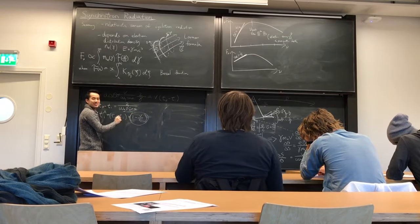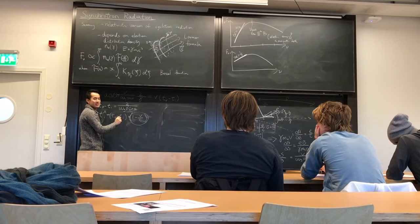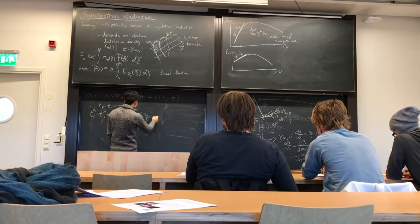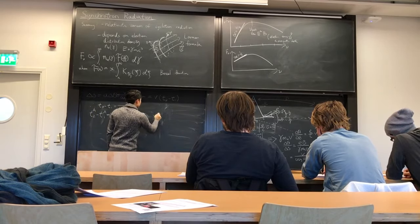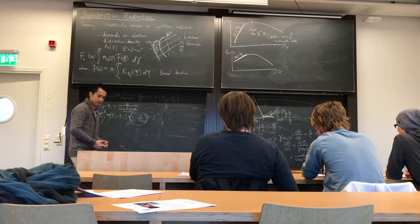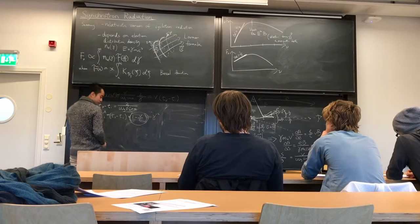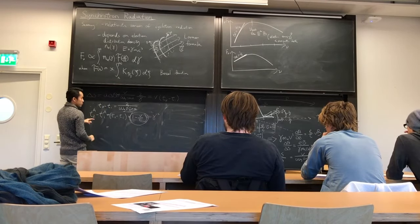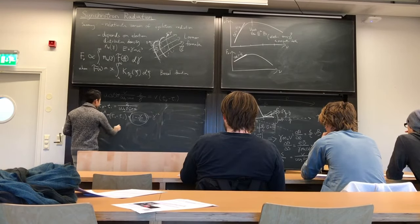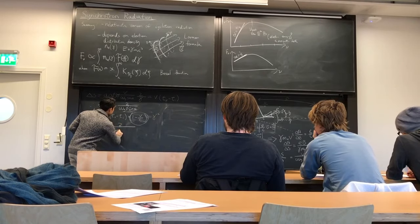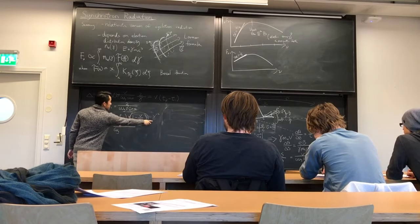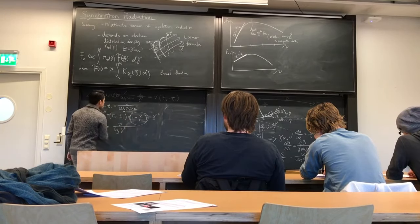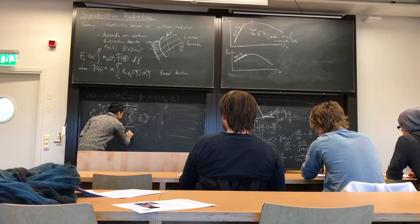Interestingly, this factor looks familiar — it is 1 minus beta, which equals gamma to the minus 2. So the arrival time difference of the two photons should be 2 over omega_g, with a factor of gamma cubed, times sine alpha.